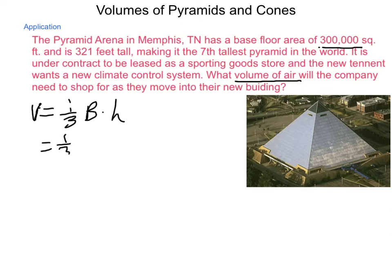Base area is 300,000 square feet. So we have one-third of 300,000 square feet times the height of 321 feet. Well, a third of 300,000 is 100,000.